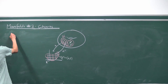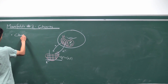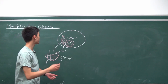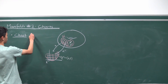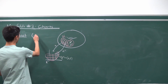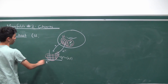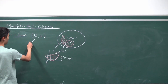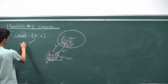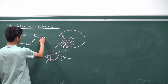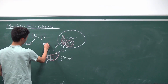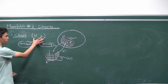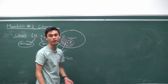So let's make a bit of a definition here. What's a chart? The chart has two pieces of information. First of all, you need to know what the chart domain is — that's going to be U. And furthermore, you need to know what the chart map is, which is X. So U is called the chart domain, and X is what we call the chart map. Both of these together form what we know as a chart — just these two pieces of information.